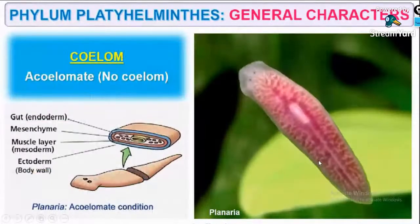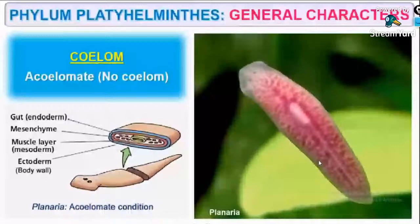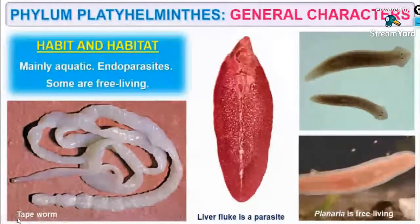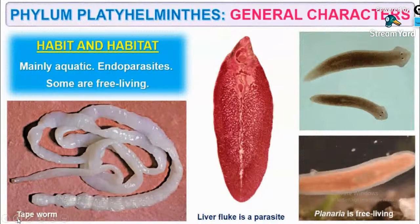It is acoelomate — there is no true body cavity in the case of Platyhelminthes. They are mainly aquatic, internal parasites, and some are free-living. Some of them are free-living and most of them are internal parasites. They are mostly aquatic. In case of the digestive system, it is incomplete and has a single opening — that single opening serves as both mouth and anus.